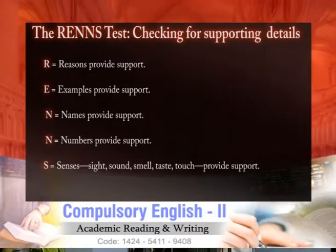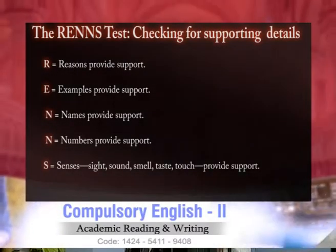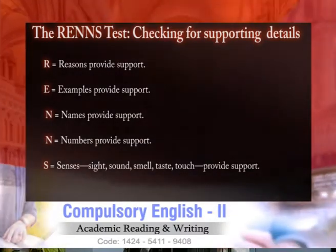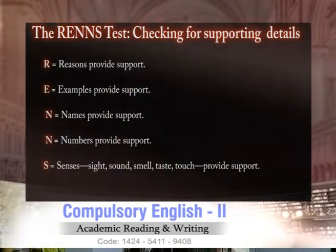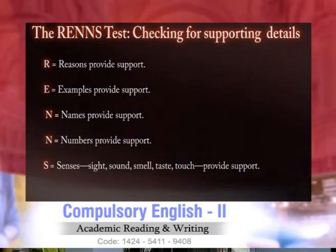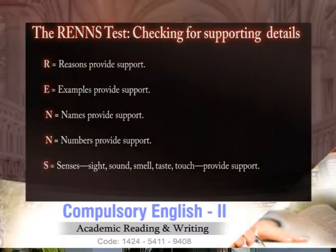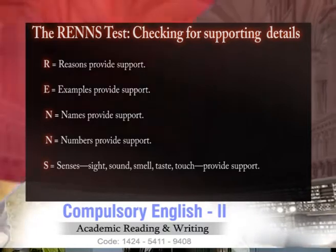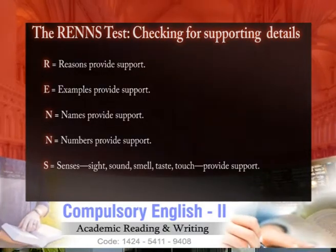Then comes supporting detail. There is a test — RENNS — for checking that you have written the supporting details in the right manner. R for reasons, which provide support. E for examples, which also provide support. N for names that provide support. Sometimes numbers provide support. And there are times where senses — sight, sound, smell, taste, and touch — provide support.